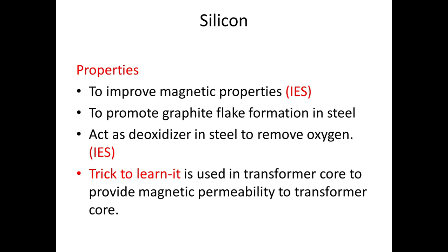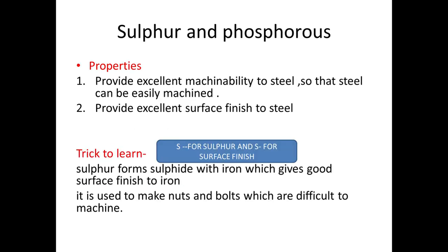Next is silicon. Silicon provides magnetic properties to steel. It also promotes graphite flake formation in steel and deoxidizes it. An example is transformers and electronics items, which use silicon steel to get the desired magnetic properties.